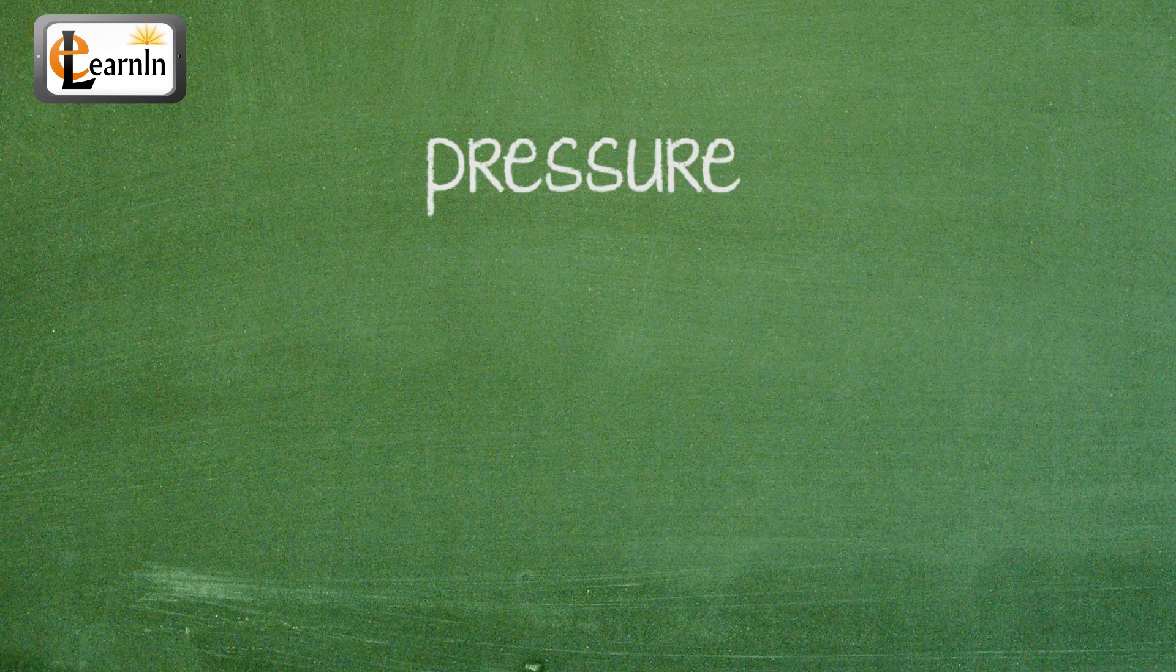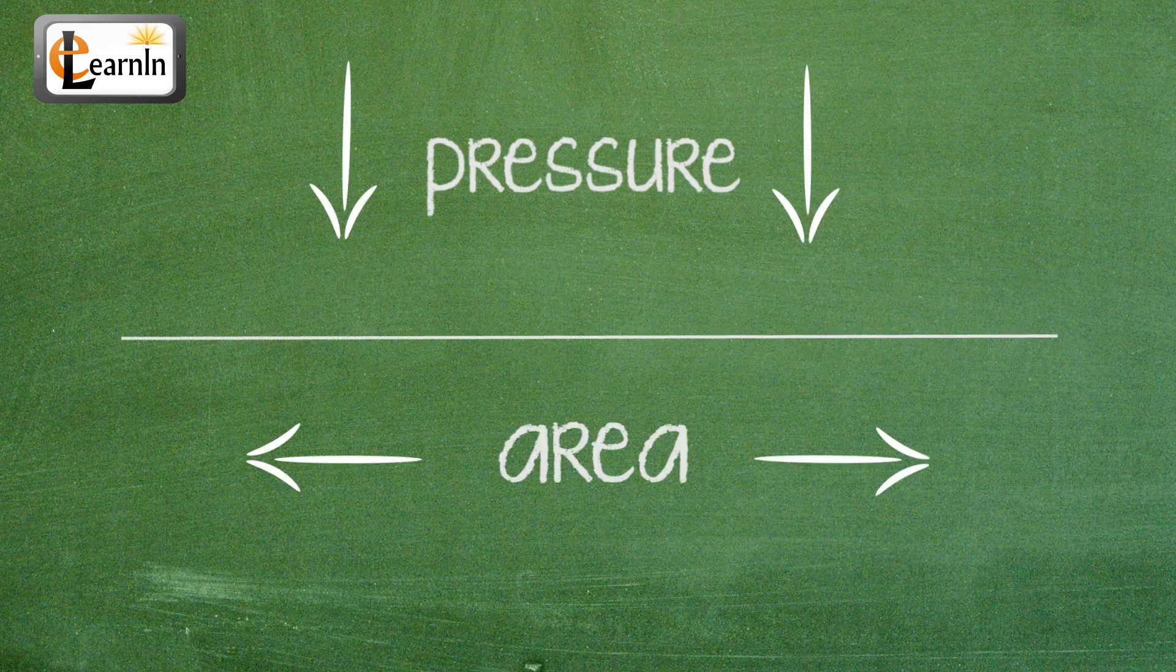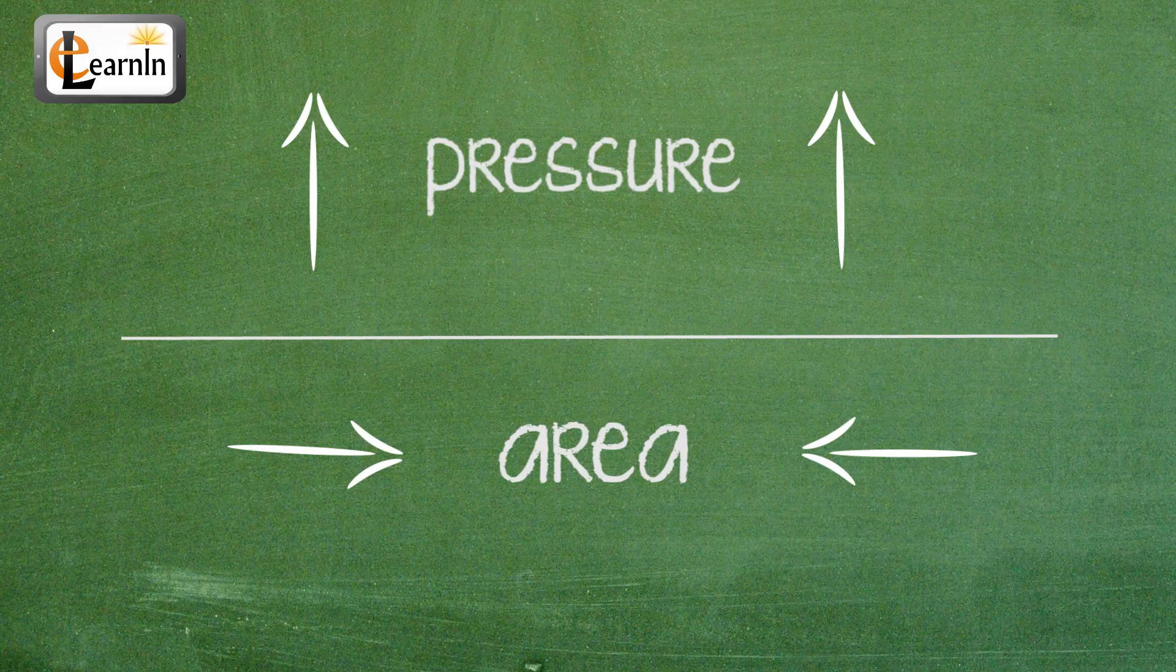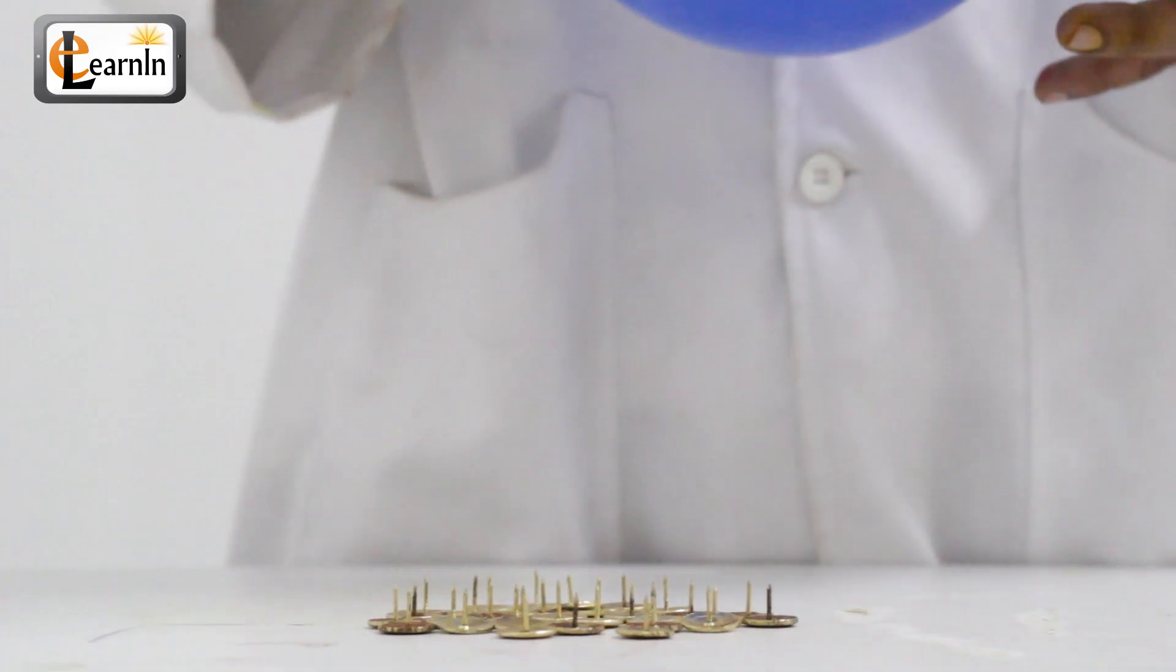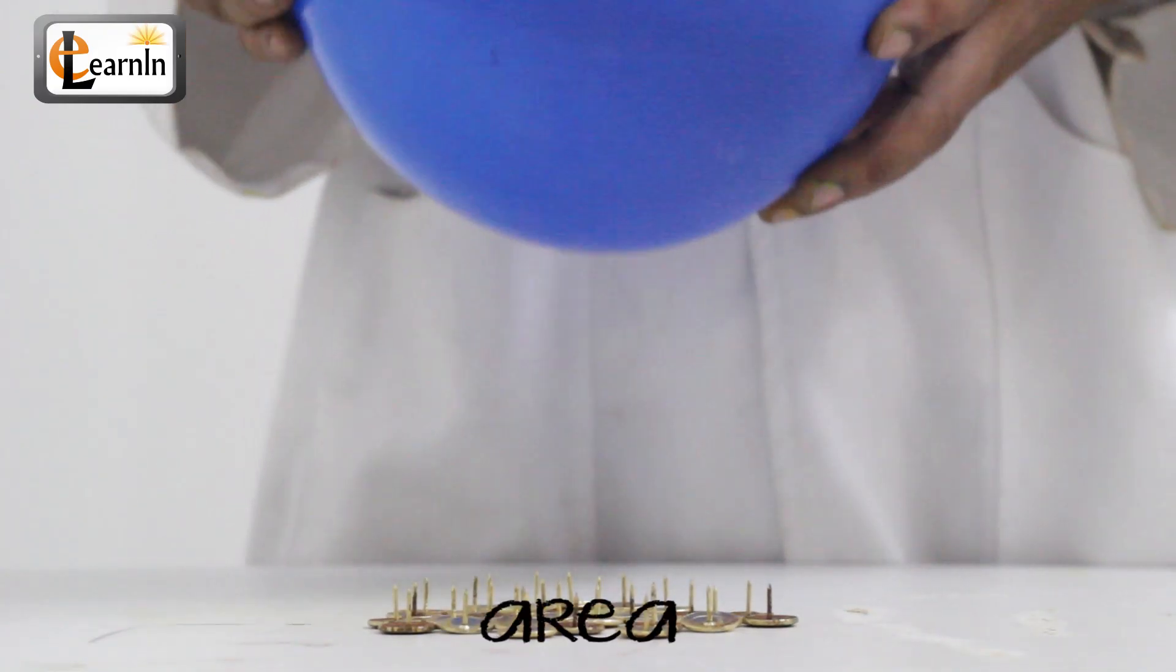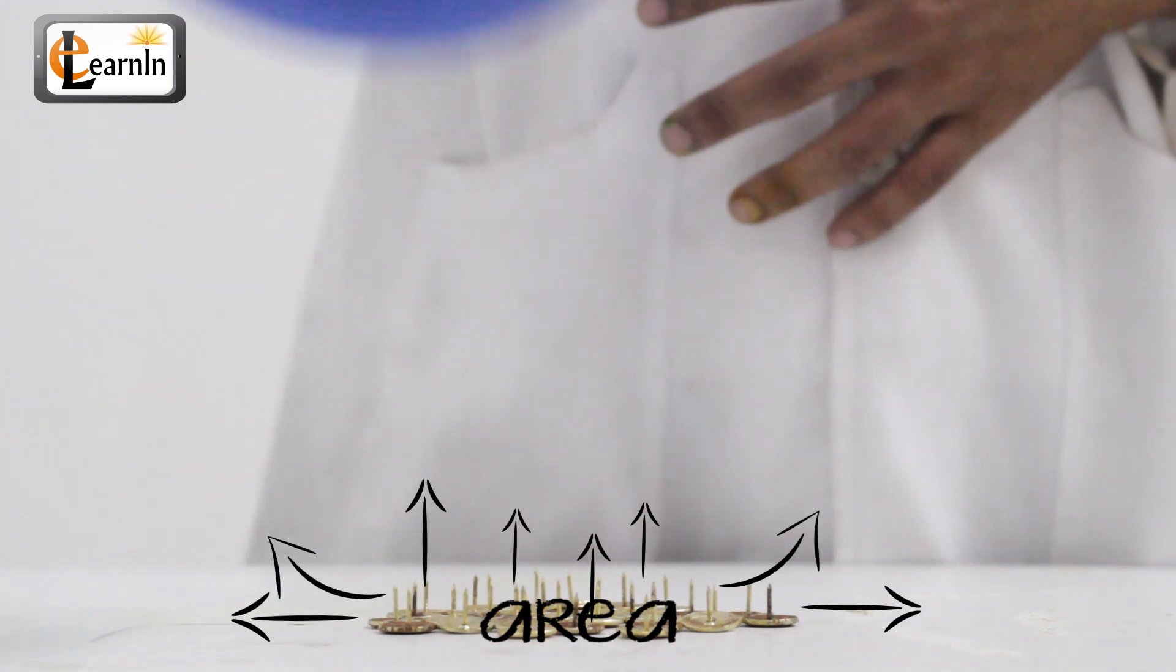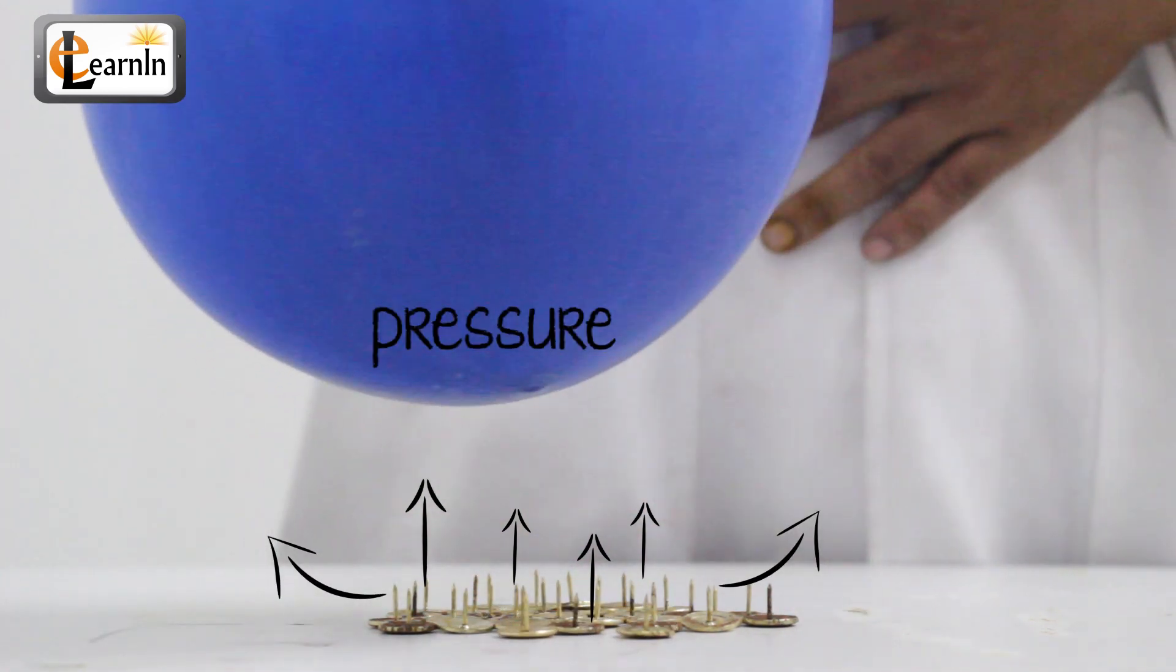For example, pressure reduces when the area increases, and increases when the area decreases. Here, in our case, the area is increased when there are a lot of pins, so the pressure acting on the balloon decreases.